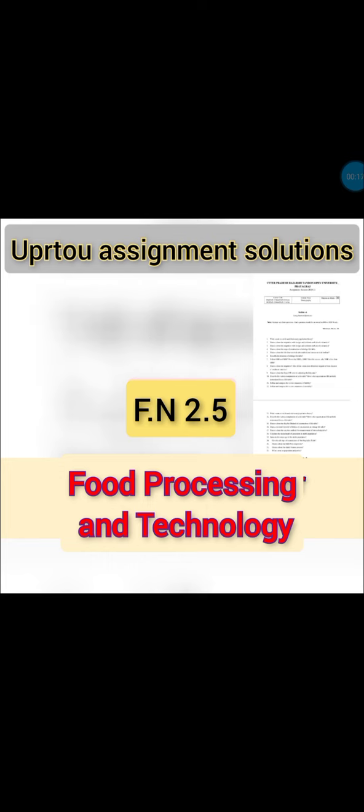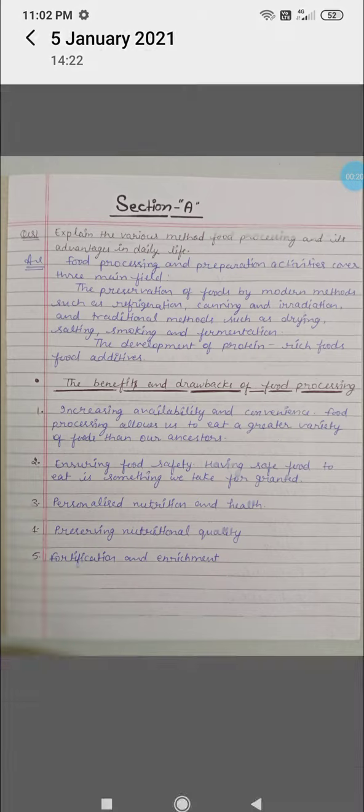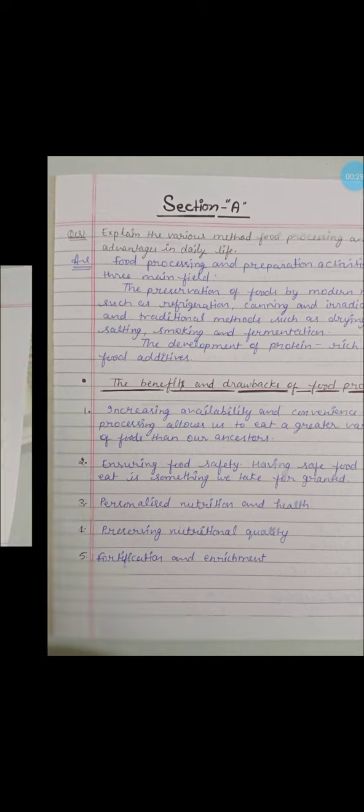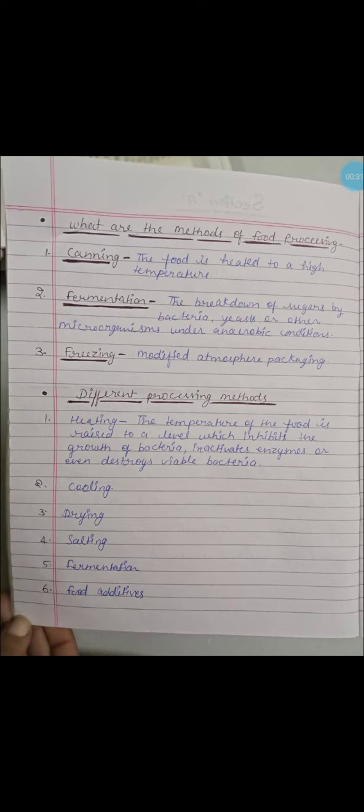Let's start. In Section A, the first question was: Explain the various methods of food processing and its advantages in daily life. You have food processing methods and its advantages in our daily life. You have the answer — read it out from here.